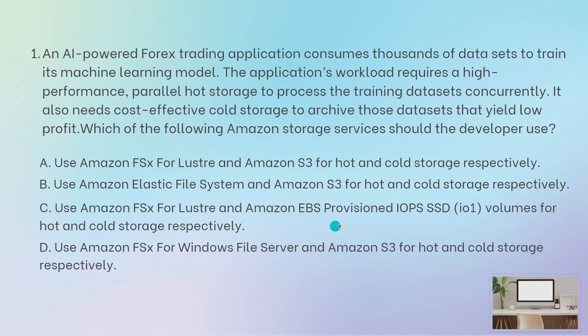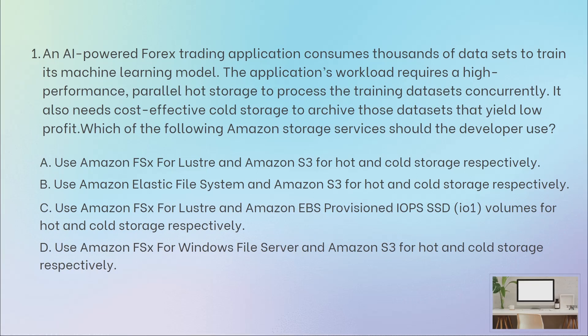Another option: use FSx for Lustre and EBS Provisioned IOPS SSD for hot and cold storage respectively. FSx for Lustre as hot storage is correct, but EBS Provisioned IOPS SSD is generally designed for hot storage — frequently accessed data with high IOPS. EBS also has a Cold HDD option, but for archiving, Cold HDD is much more expensive compared to S3 Glacier. That's why, for cost-effectiveness, S3 is the better cold storage choice.